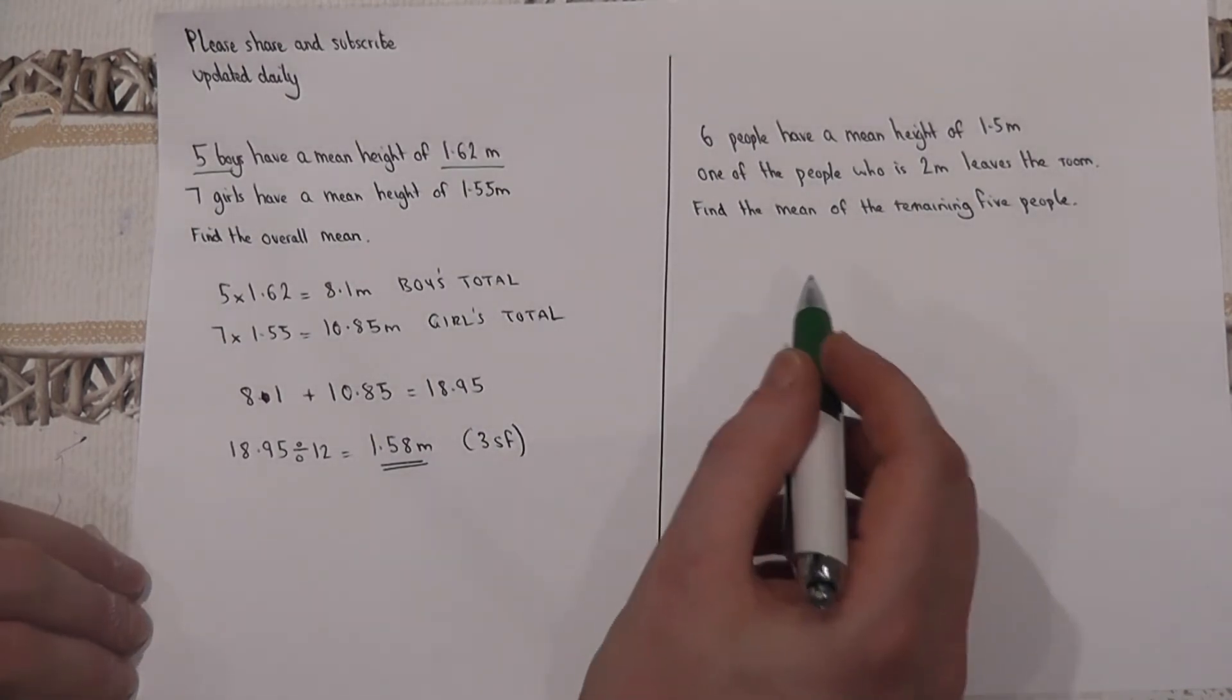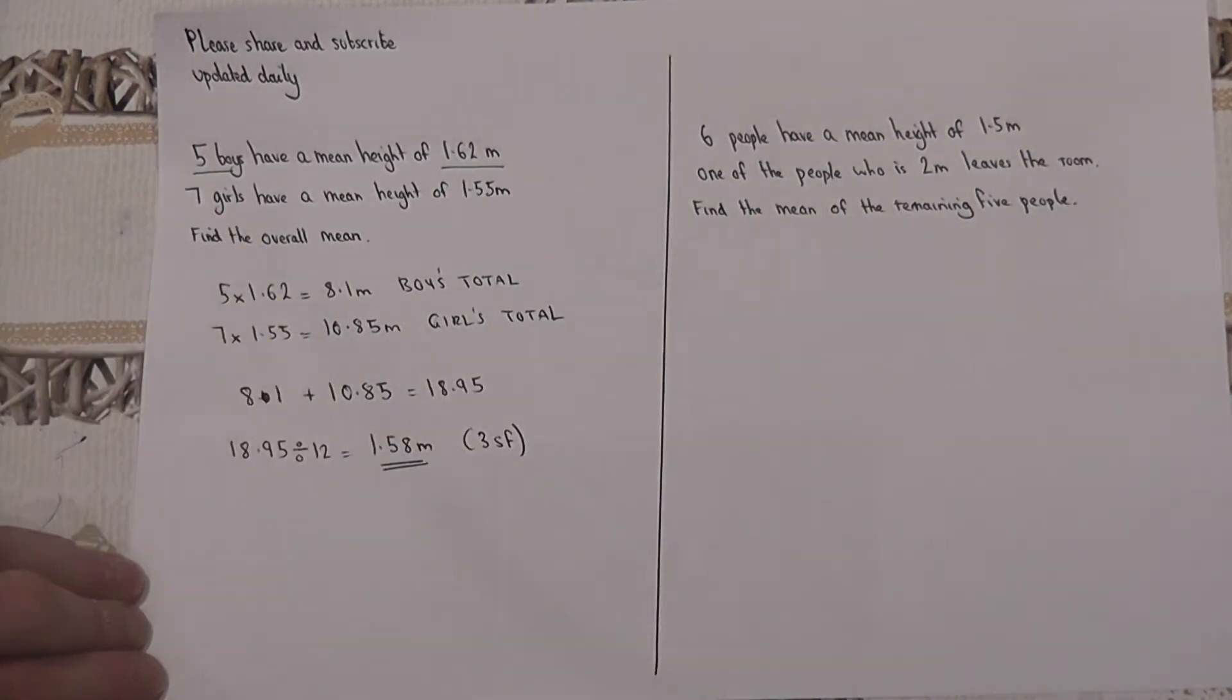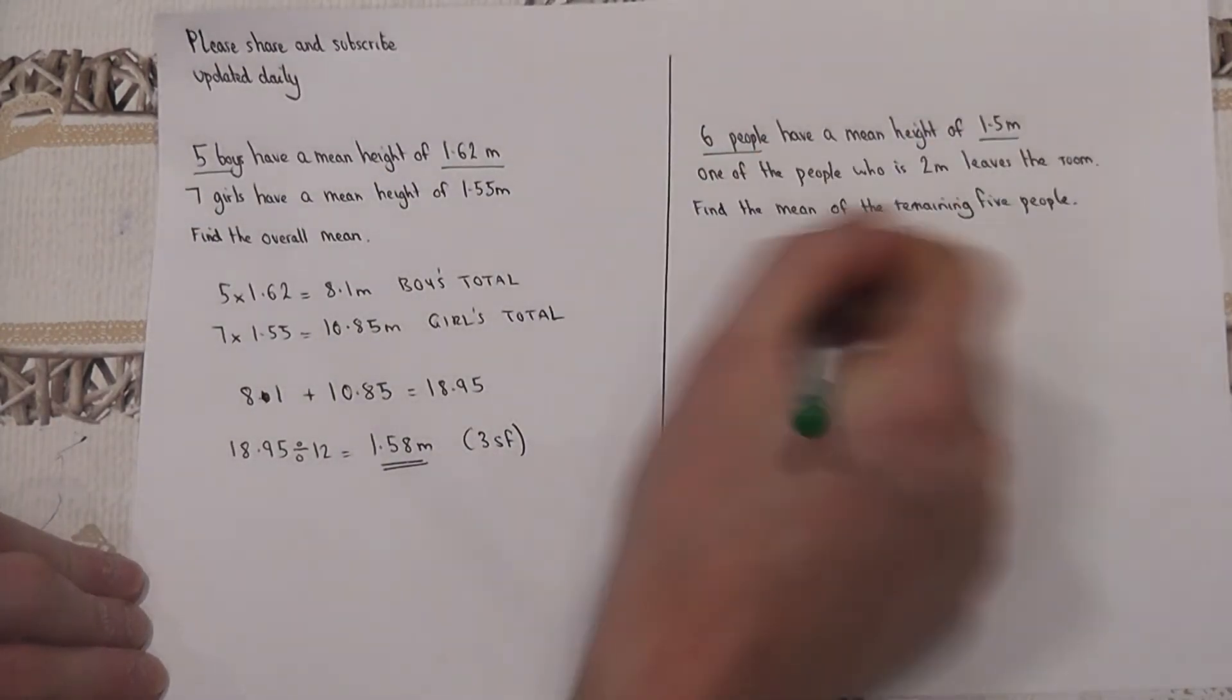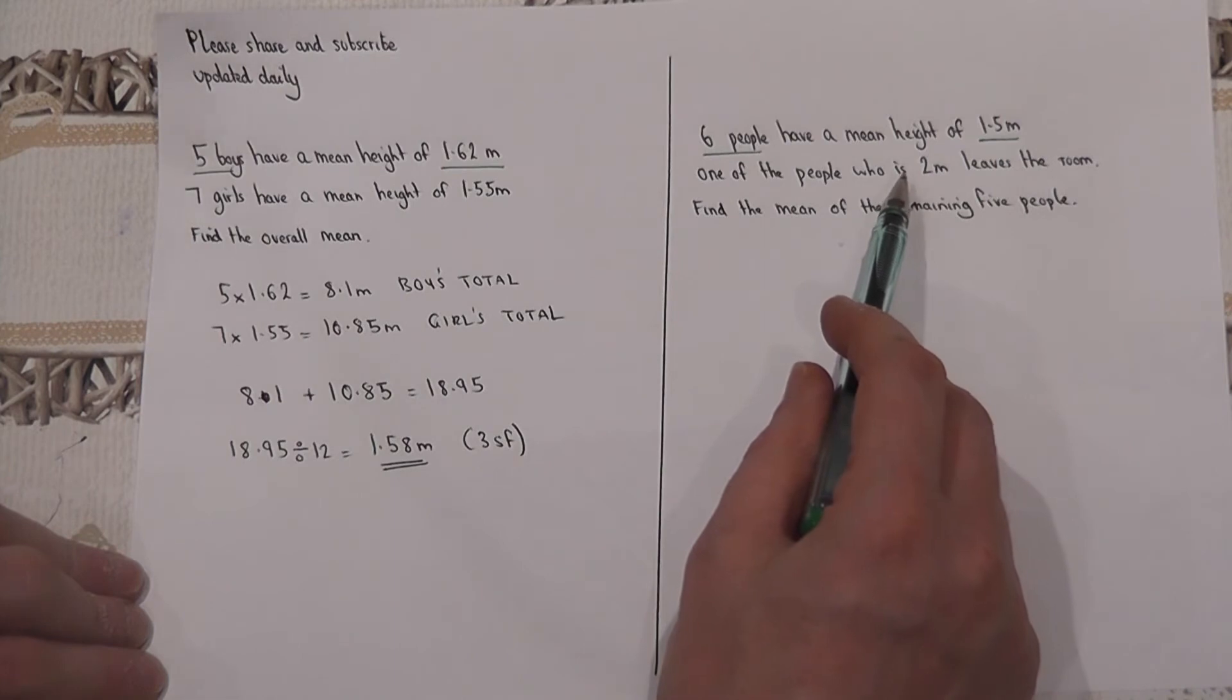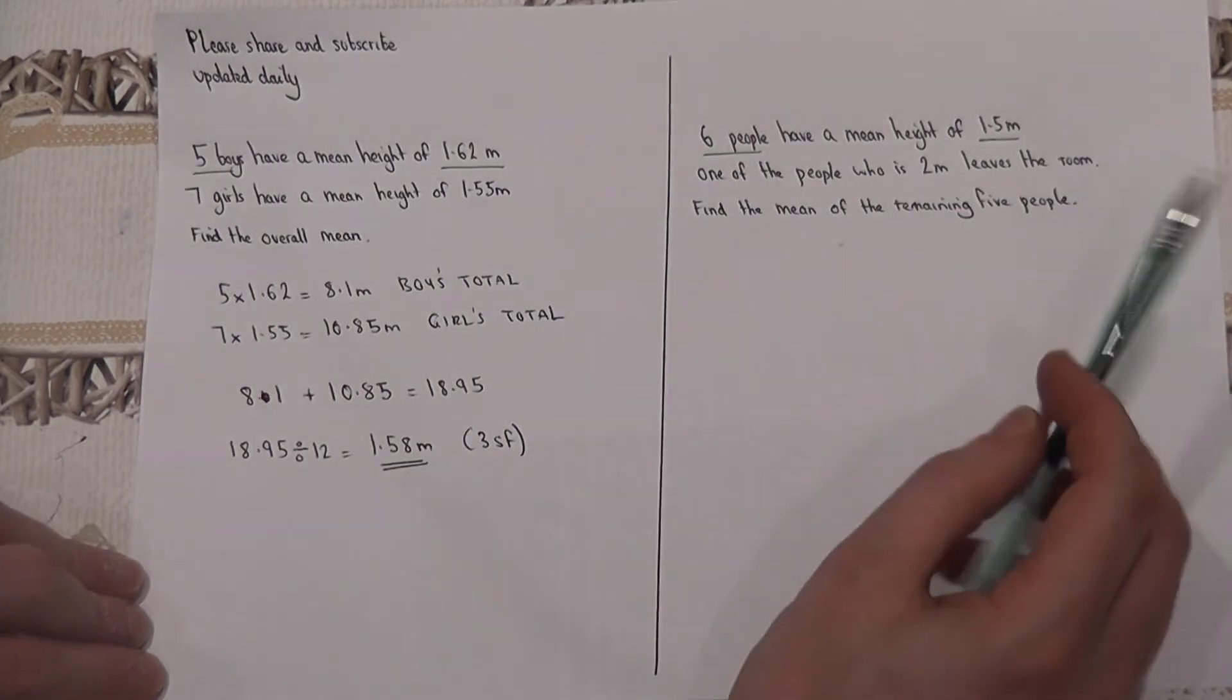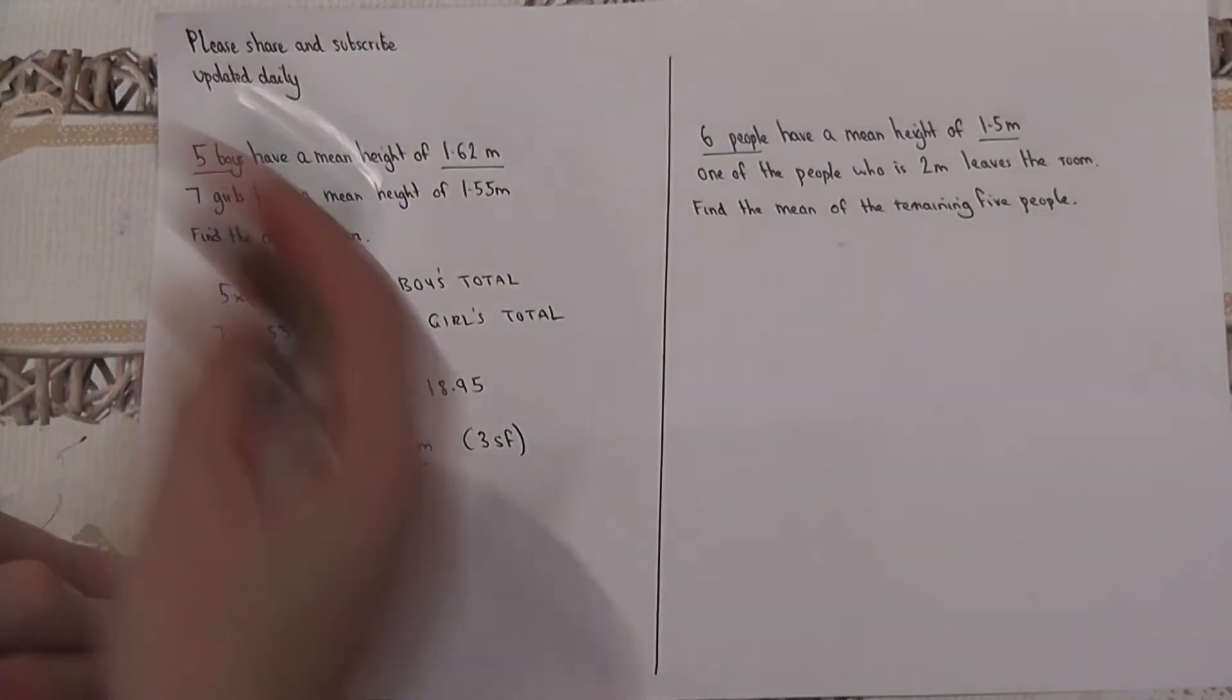Now the second problem is similar but subtly more difficult I think to get your head around. In a room there are six people and they've got a mean height of 1.55, and one of these people leaves the room. We don't know who, but we do know that one person has a height of two meters. So a very tall person leaves the room and we'd expect the average to decrease, but the question is what is this new average or the mean of the people left once this tall person has left the room.